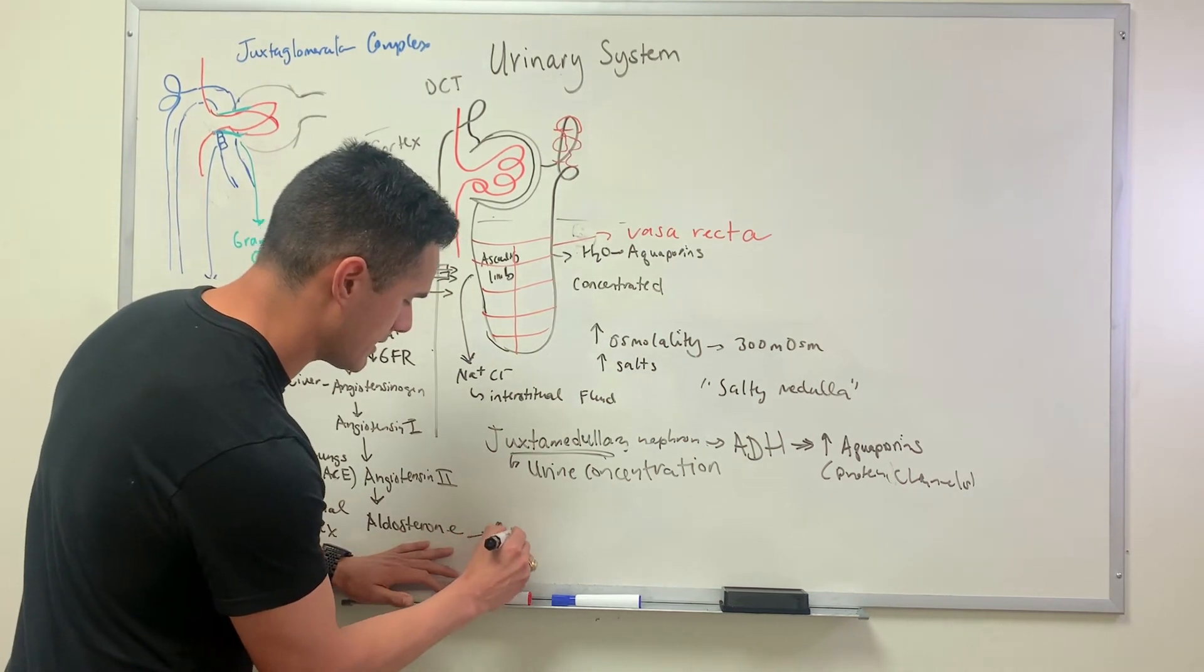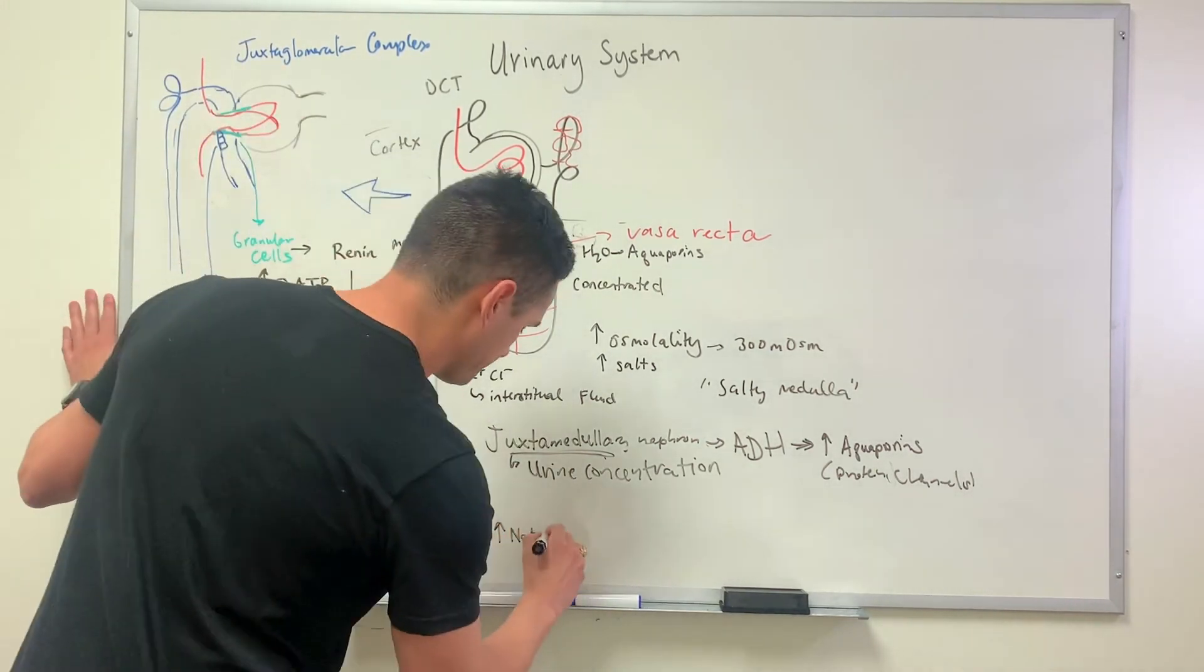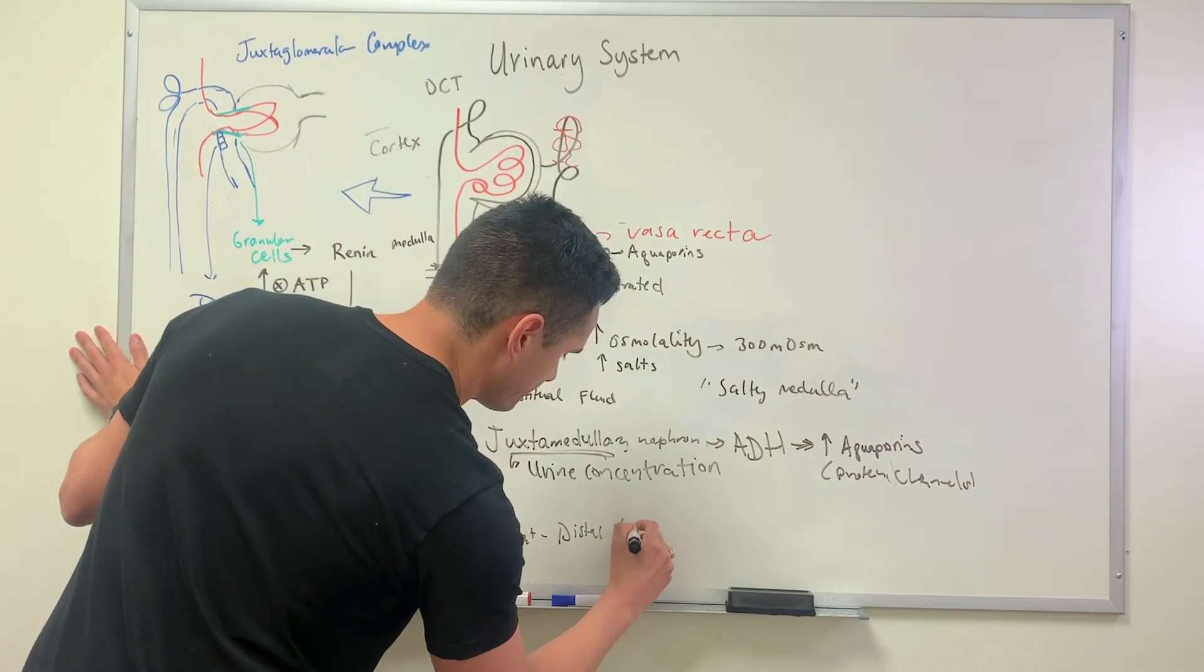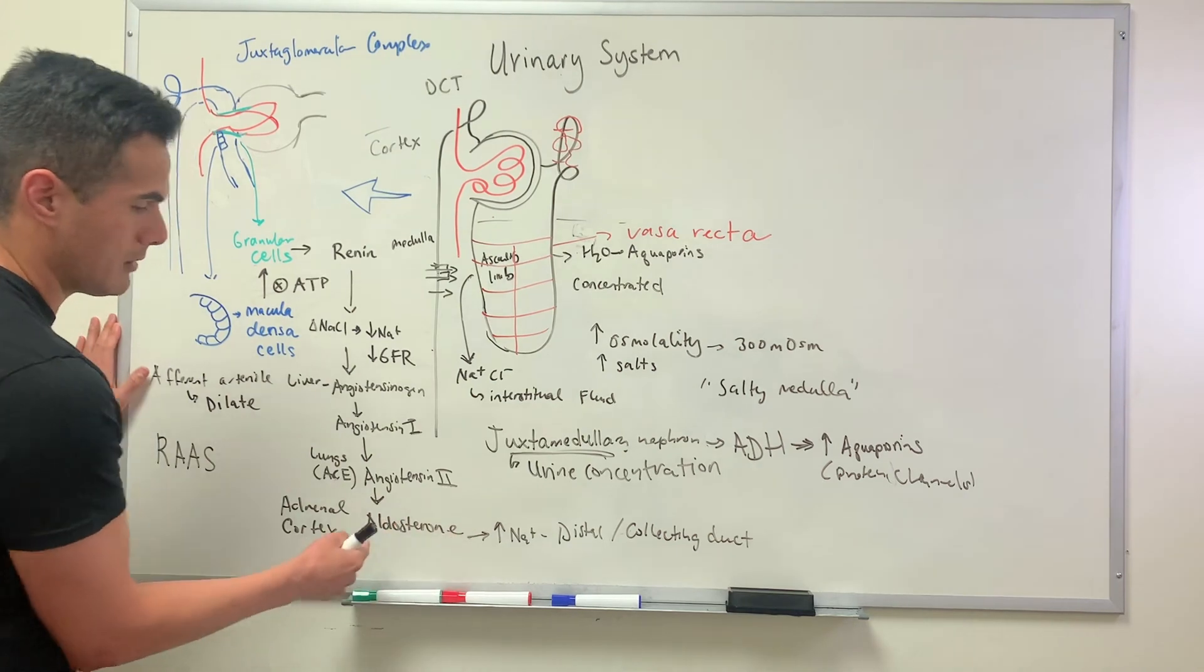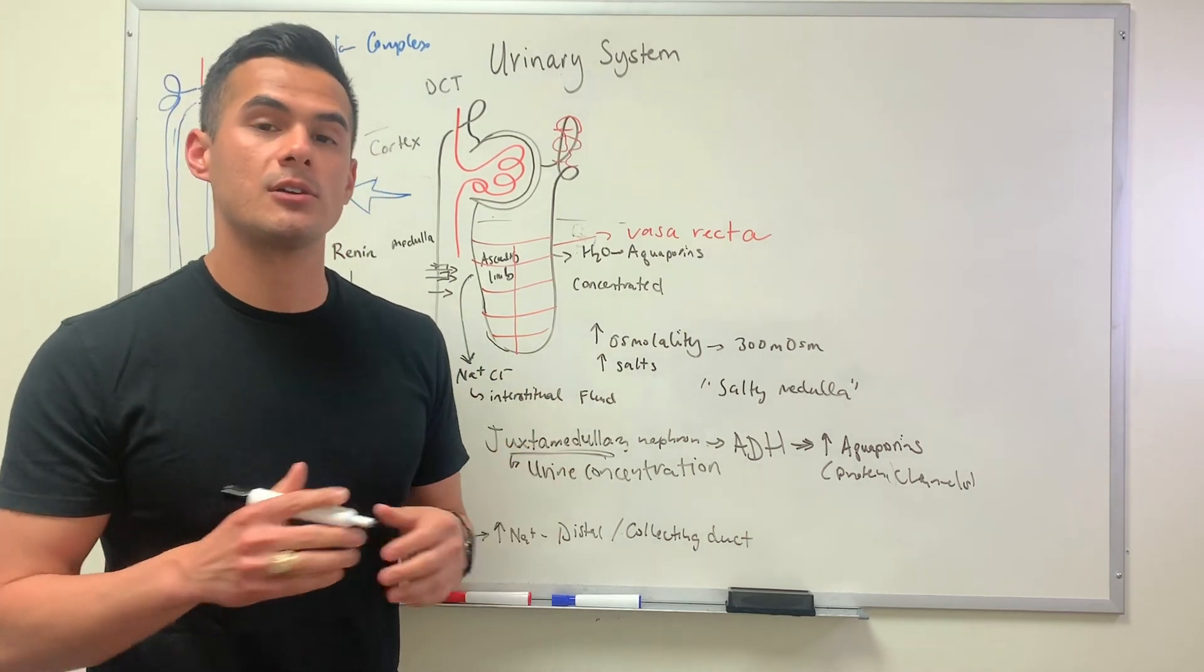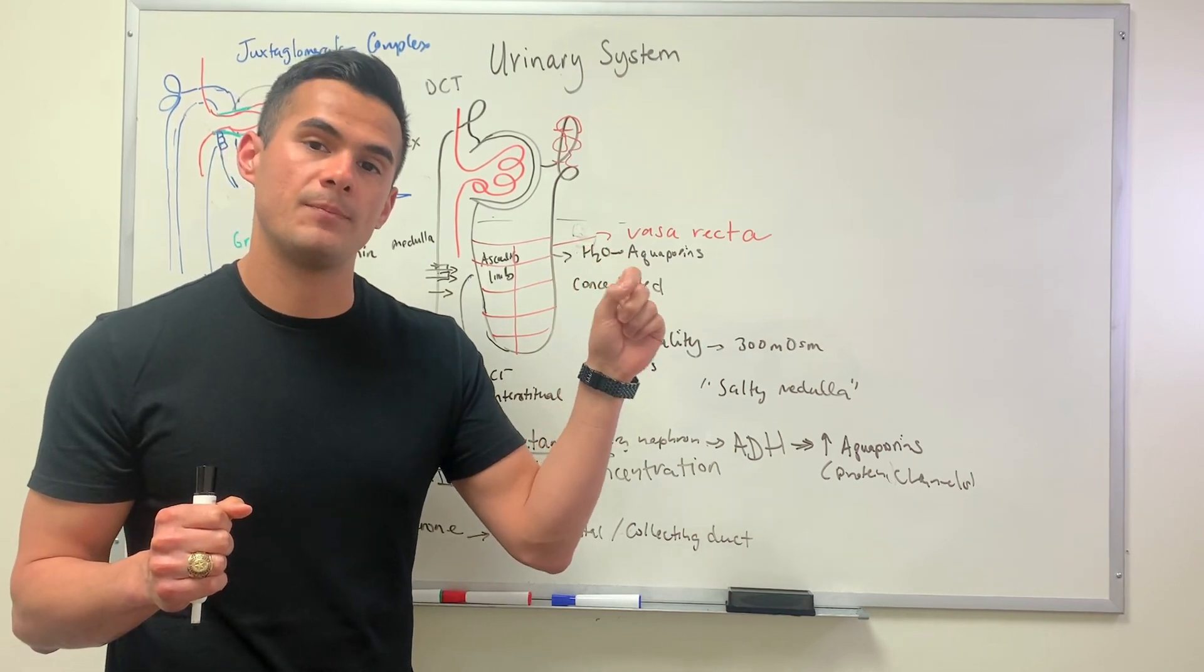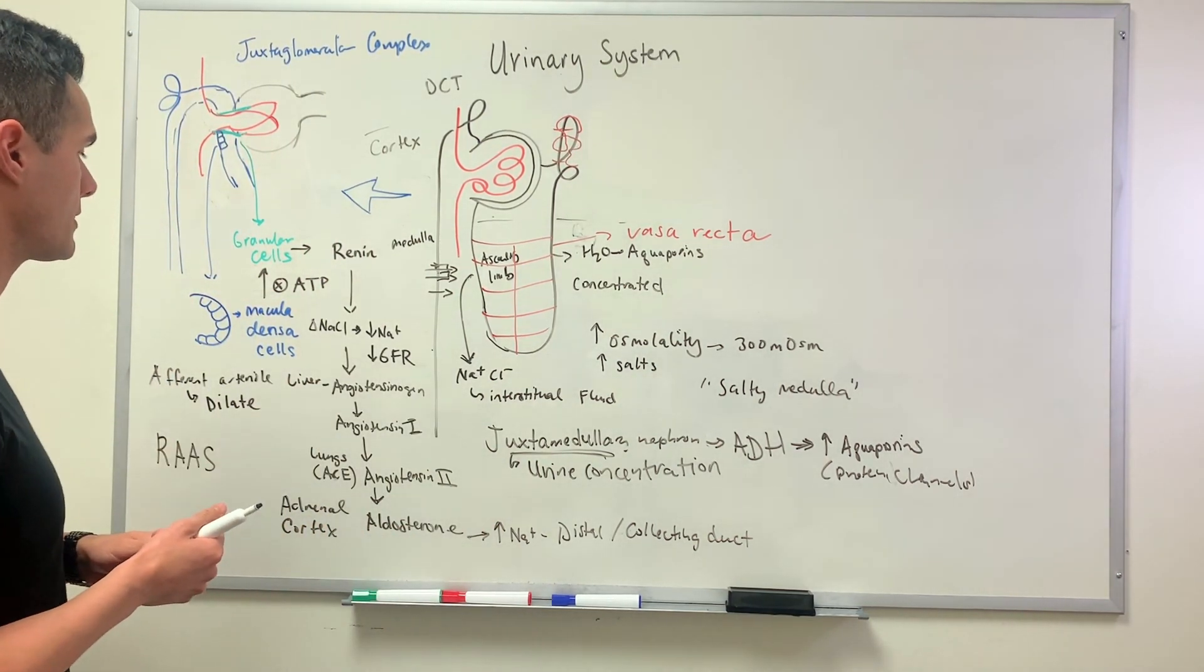We've already discussed the mechanism of how aldosterone works. Its effect is it increases the sodium reuptake at the collecting duct. Once aldosterone binds to its receptor in the cytosol, it activates the cascade of events where we can get the epithelial sodium channel into the membrane and allow the influx of sodium into the cell.